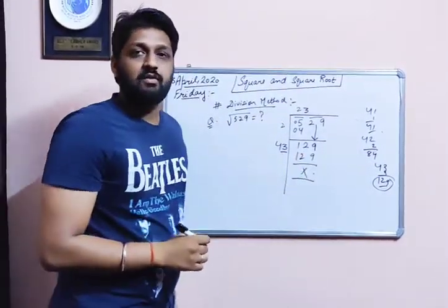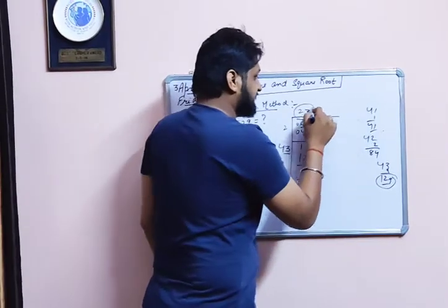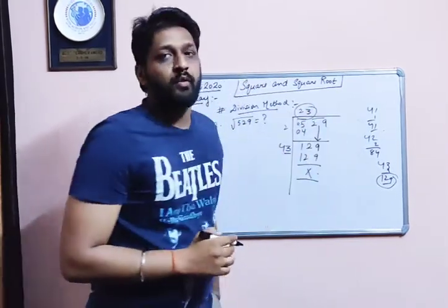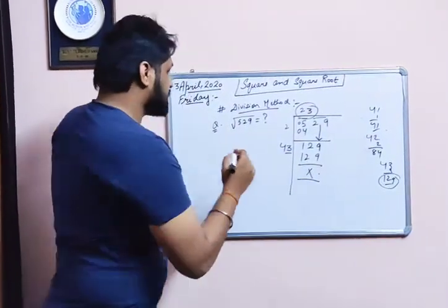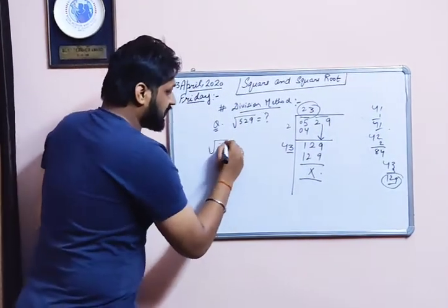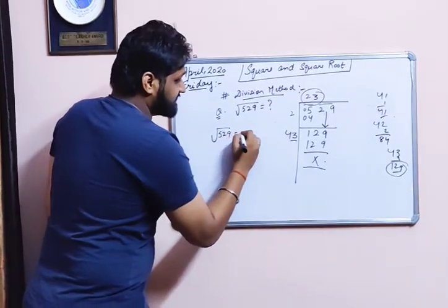43 multiplied by 3 is 129 and the remainder is 0. When the remainder is 0, the answer is the square root of that particular number. So the square root of 529 is 23.